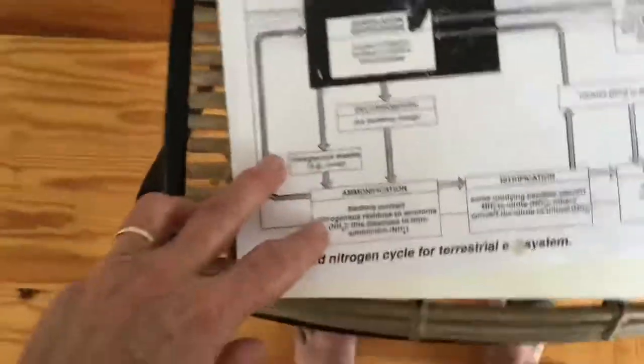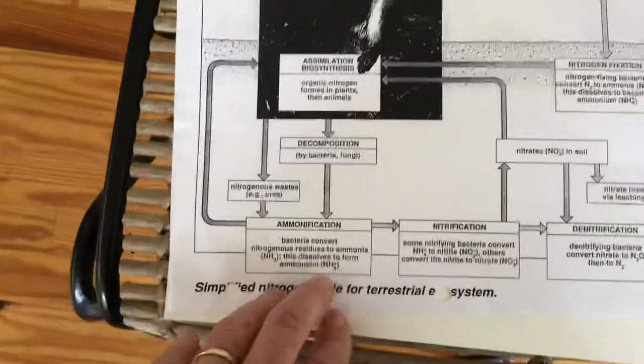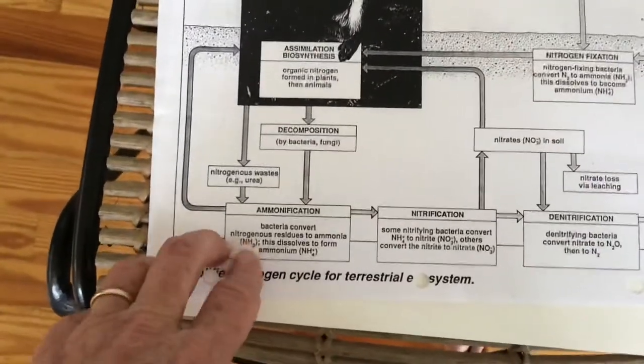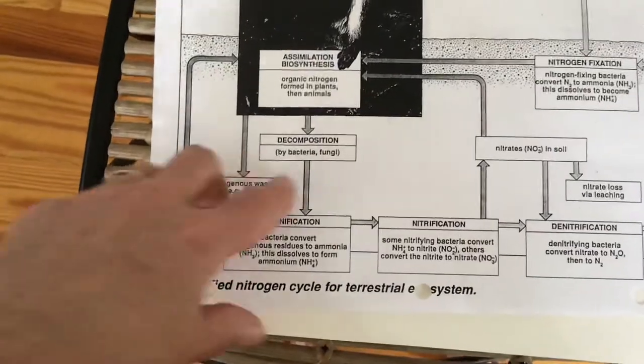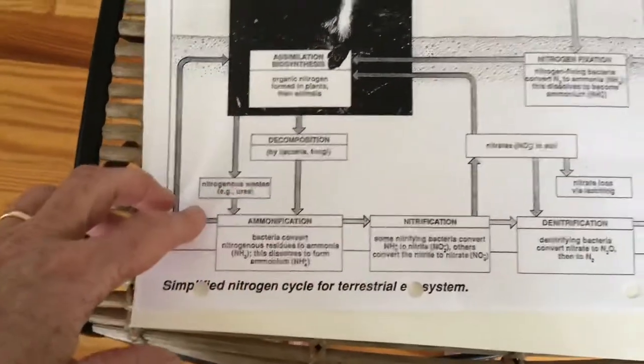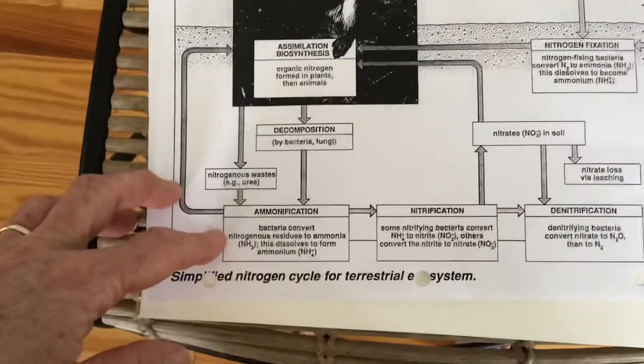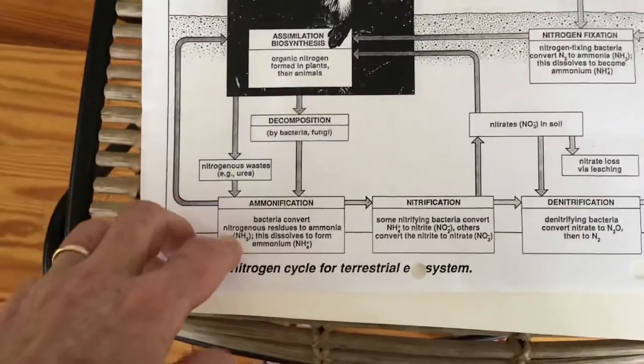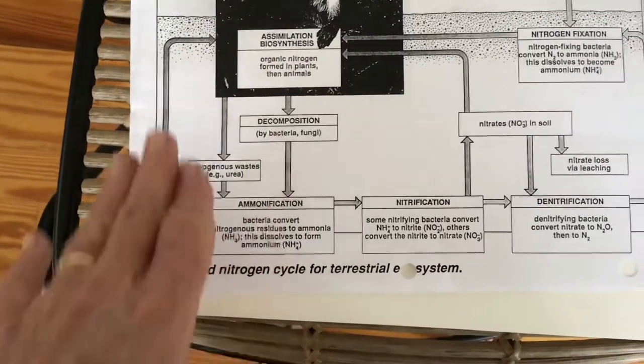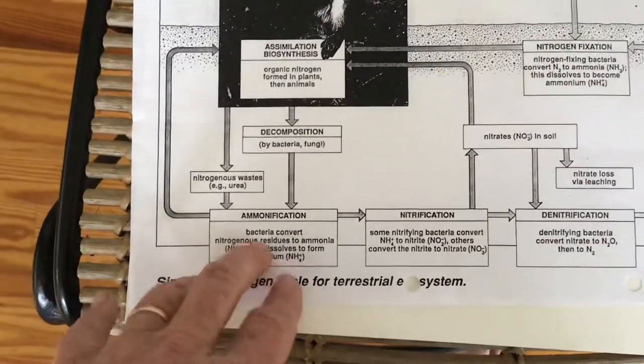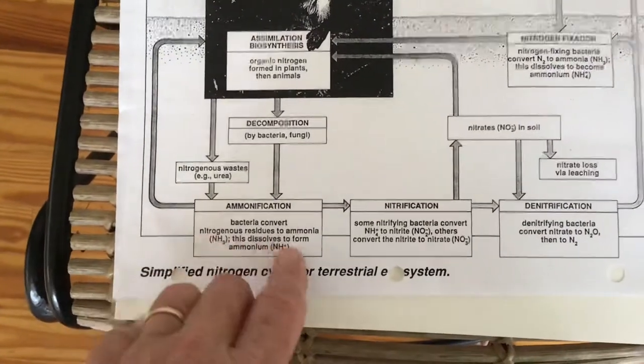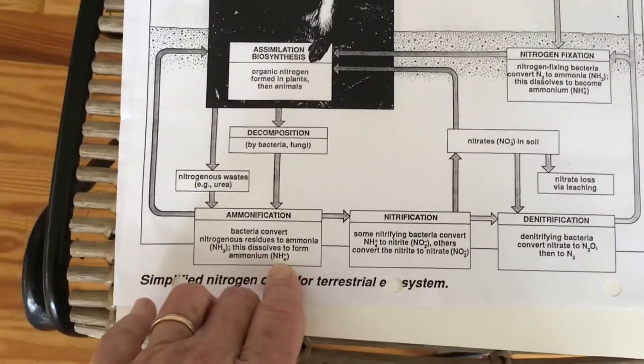A different group of bacteria, once things are kind of small, is going to take the nitrogen compounds that are part of these organic molecules - mainly proteins of course - and they are going to turn it into ammonia. Then it's going to dissolve in water that is in the soil and become ammonium, so that's NH4.